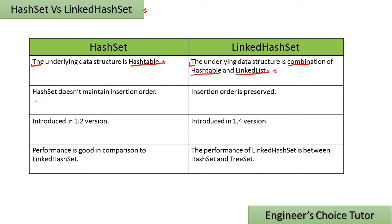The second difference is that HashSet doesn't maintain insertion order, whereas LinkedHashSet maintains the insertion order. That's why we say that insertion order is preserved in the case of LinkedHashSet, whereas insertion order is not preserved in the case of HashSet.